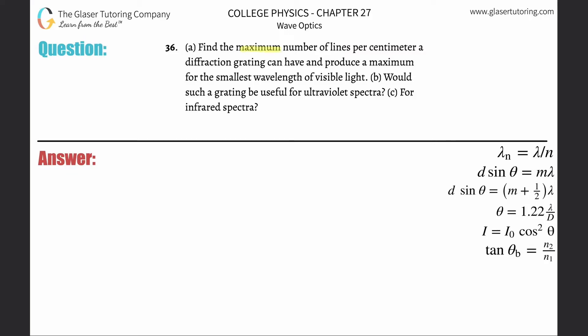Number 36, letter a: Find the maximum number of lines per centimeter a diffraction grating can have and produce a maximum for the smallest wavelength of visible light. Since we're dealing with maximums, we're going to be dealing with this constructive formula that we have been for the past 34 problems: d sin θ equals mλ.